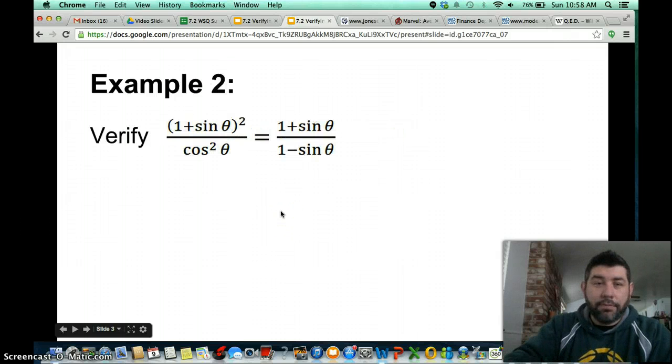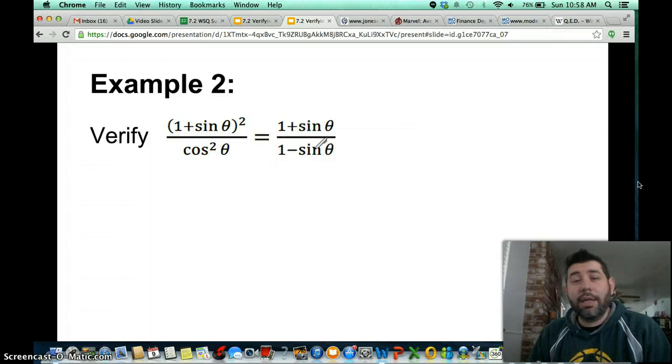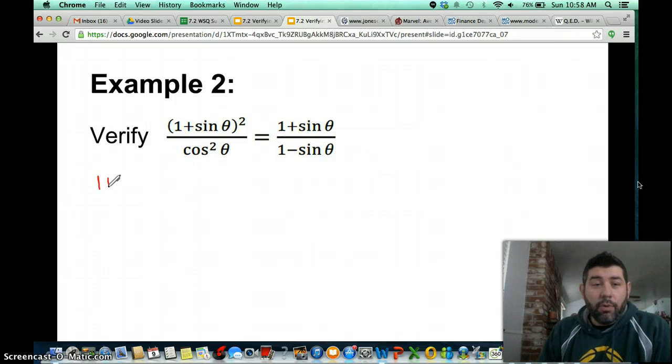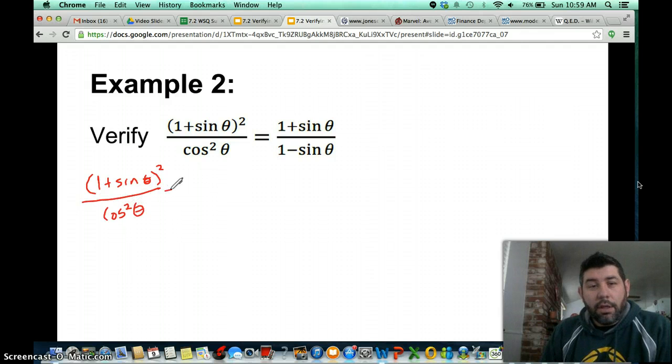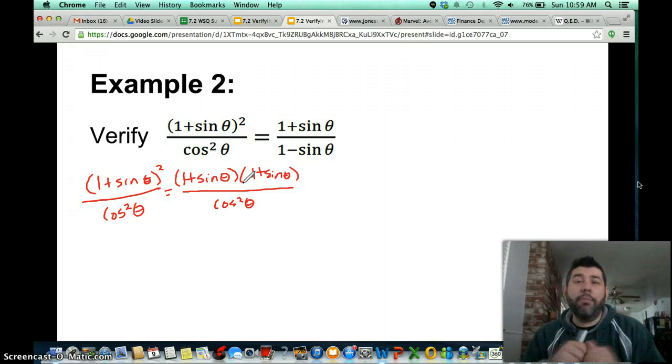Okay, so let's go ahead and go back to our slide here. We'll do example 2 now. Okay, so example 2. This one has two complicated sides, but I'm going to go with the square side. It looks like I can solve it a little bit easier here. So let's start with 1 plus sine theta squared over cosine squared. And you know what I'm going to do here? I'm going to just separate this to 1 plus sine theta times 1 plus sine theta over cosine squared.